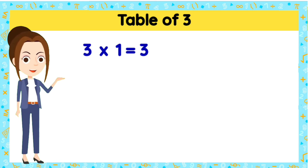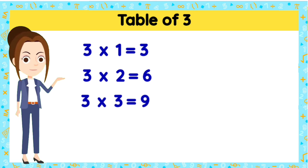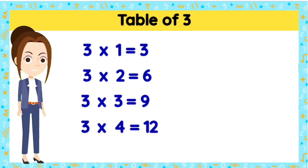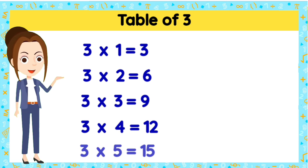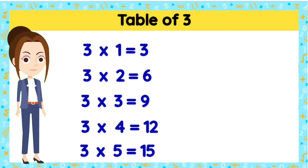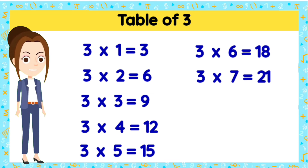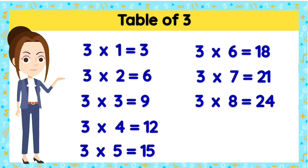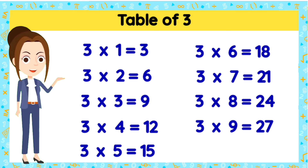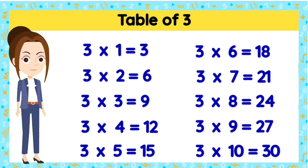Now come, let's recapitulate the table that we learned. Three ones is three. Three twos are six. Three threes are nine. Three fours are twelve. Three fives are fifteen. Three sixes are eighteen. Three sevens are twenty-one. Three eights are twenty-four. Three nines are twenty-seven. And three tens are thirty.